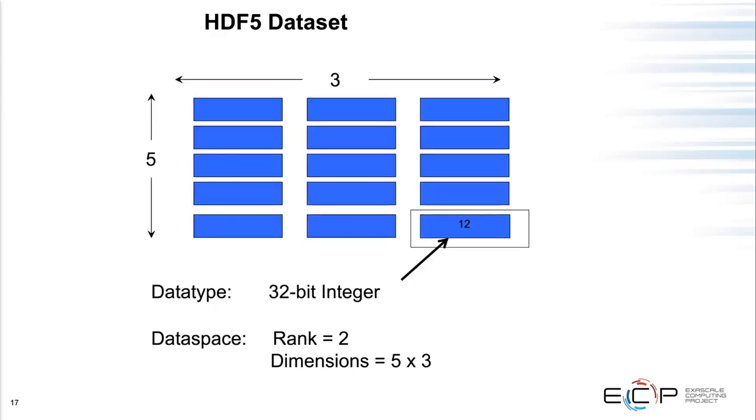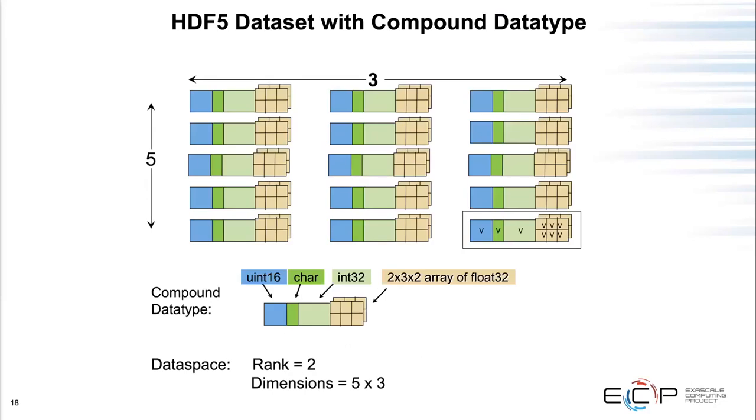This is a simple dataset. The metadata says my data type is a 32-bit integer, and so each array element has a value. The data space for this is 2D 5 by 3. This is an example of a slightly more complicated one. Still, the data space is identical, still two-dimensional 5 by 3, but now the data type is much more complicated. It's this compound type, like a struct, with four fields. One is an unsigned 16-bit integer, one is a character, one is a 32-bit signed integer, and the other one is a field that's nested. Its type is array type, and the base type for that three-dimensional array type field is a 32-bit float.